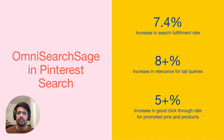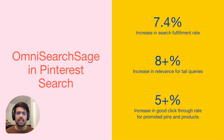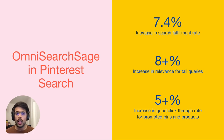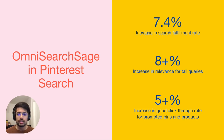Across several applications in the search system, these embeddings have led to remarkable results: over 8% improvement in tail relevance, over 7% boost in engagement, and more than 5% increase in the click-through rates for promoted pins and products.